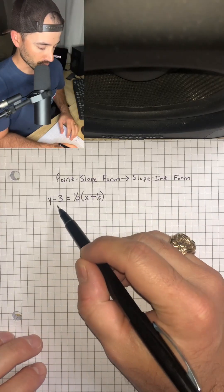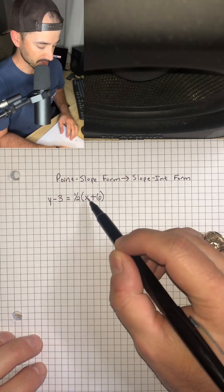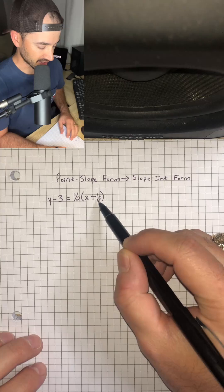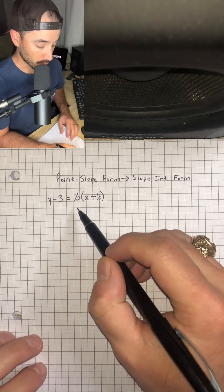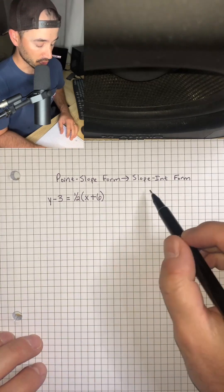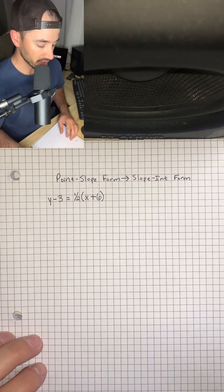So we have the equation y minus 3 is equal to 1 half times parentheses x plus 6. And we want to convert that, which is in point-slope form, to slope-intercept form, okay? Really easy.